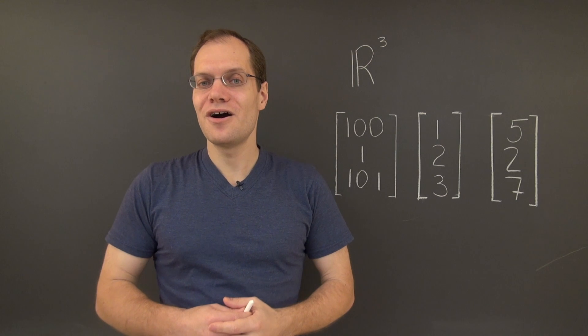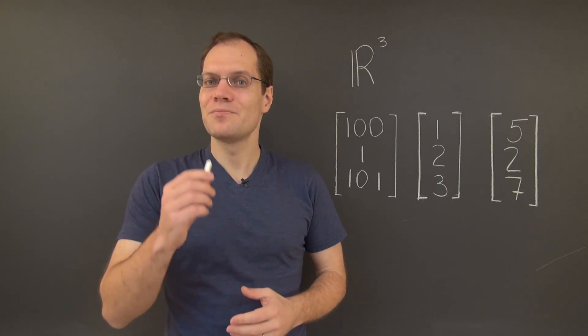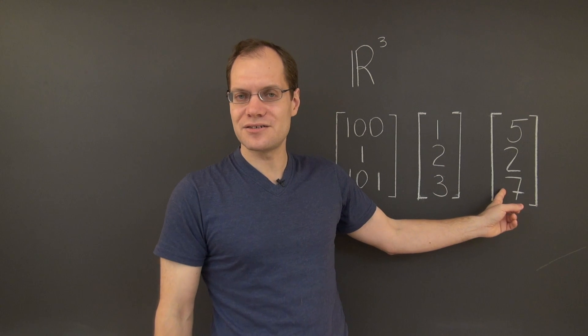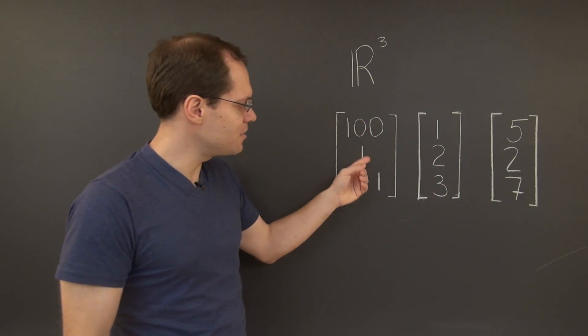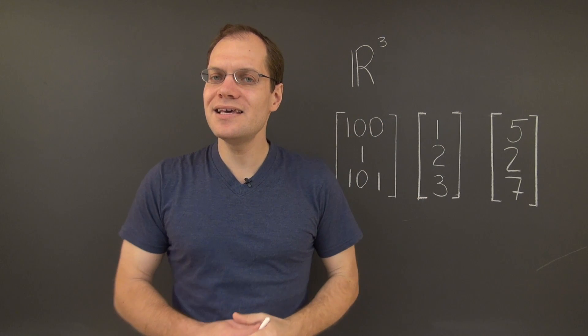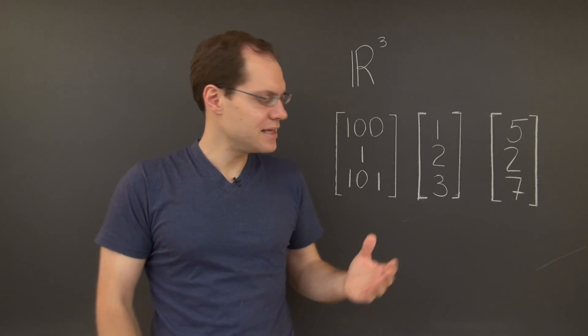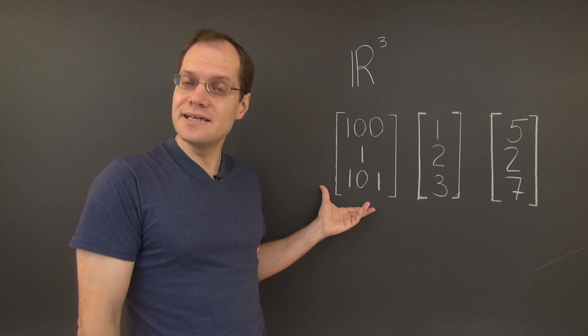Well, because the numbers are too complicated, but we do notice that the last entry of every vector is the sum of the first two. That's the key insight, but does it help us conclude that these vectors are linearly dependent?